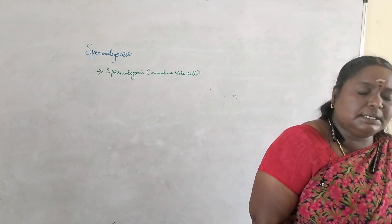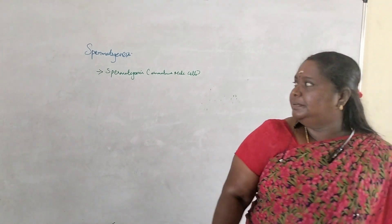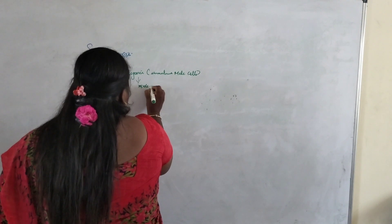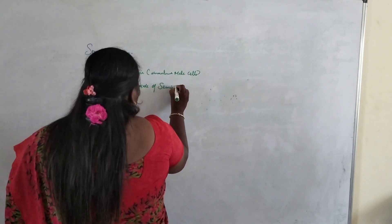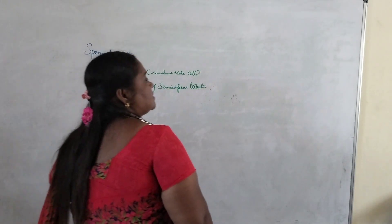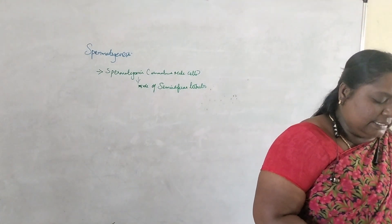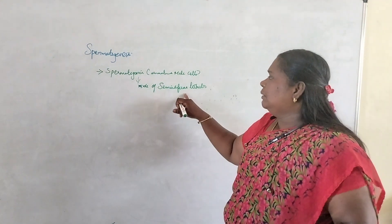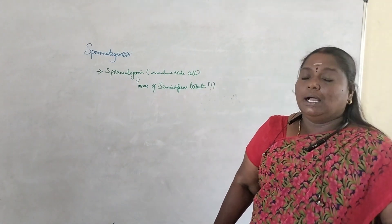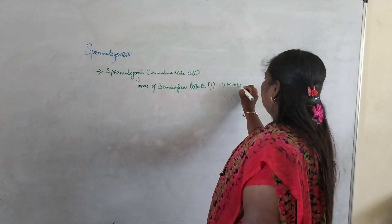A spermatogonium — singular spermatogonium — is present on the inside wall of the seminiferous tubules. It should be present inside the seminiferous tubules. It is considered to undergo mitotic division, increasing in number.